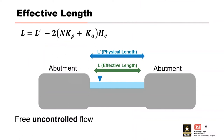It is important to always use the effective crest length — this is a common mistake people make. When calculating free uncontrolled discharge using the Weir equation, use the effective crest length, not the physical length of the actual spillway crest. The effective length will always be less than the physical length because of flow contractions that occur near abutments and piers. Do not use the physical length of the crest because it will overestimate the available discharge.